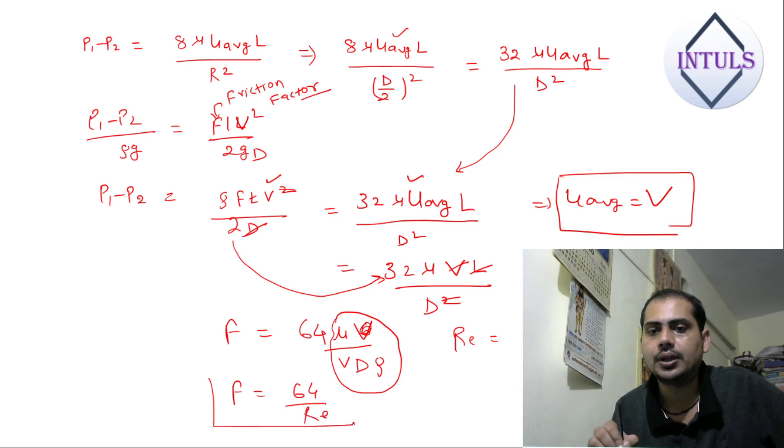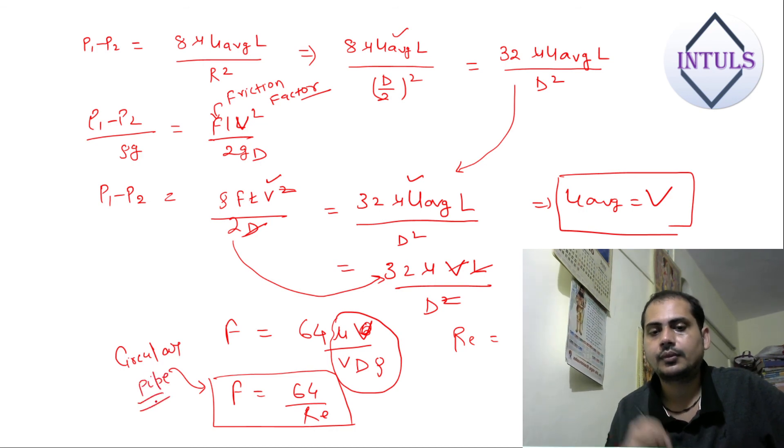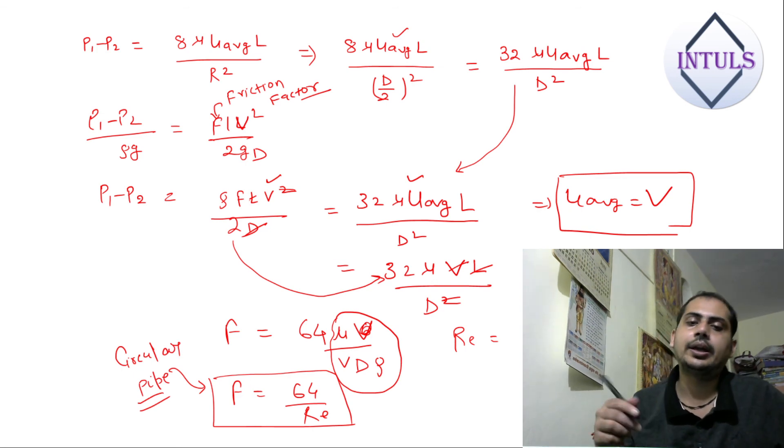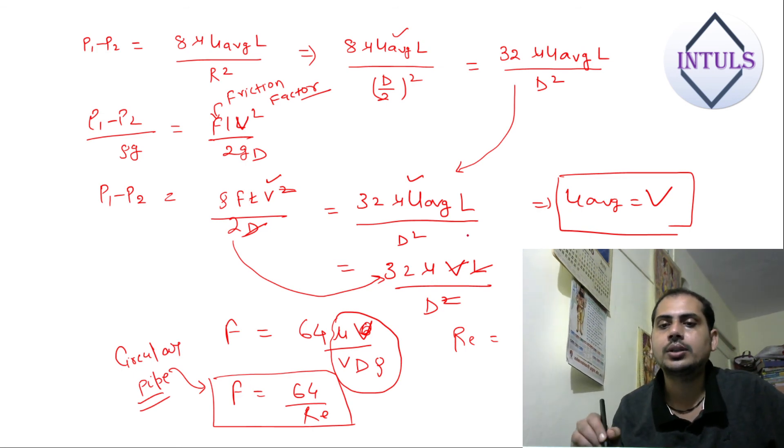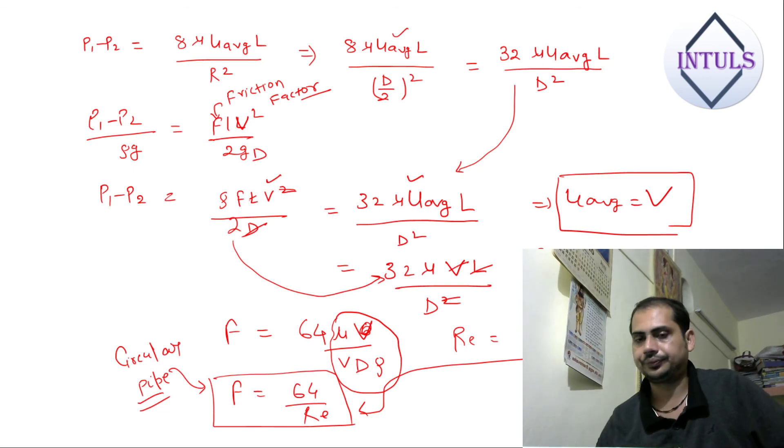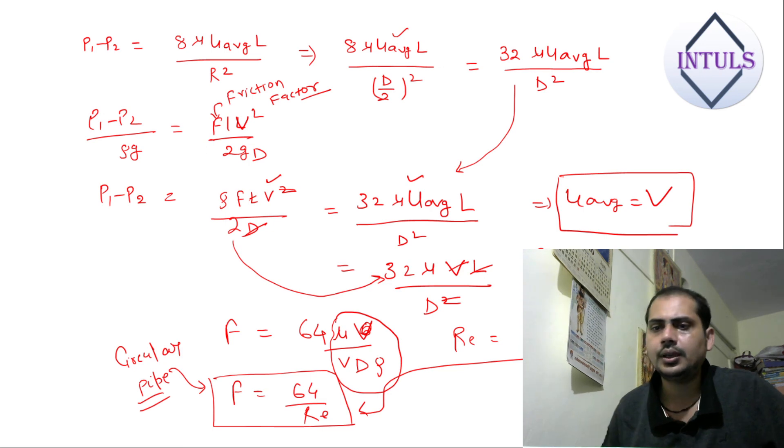And this is valid only for circular pipe. f equals 64 by R. Sometimes in examination they directly ask what is the value of the friction factor and Reynolds number is given, so you have to put like this directly, this equation 64 by R.